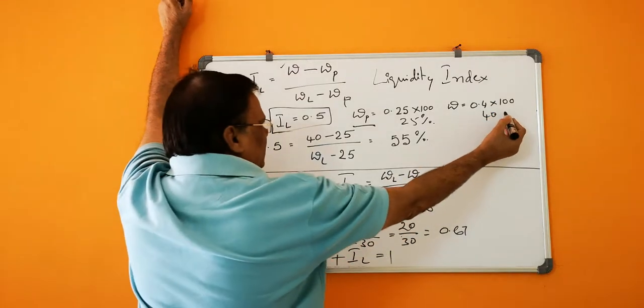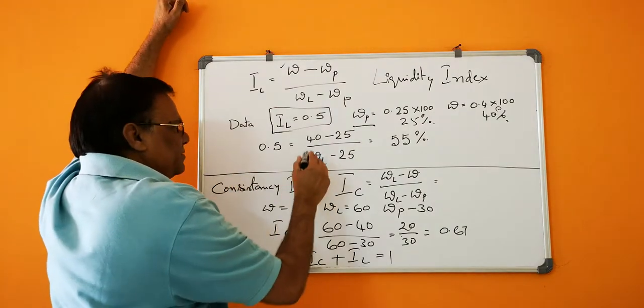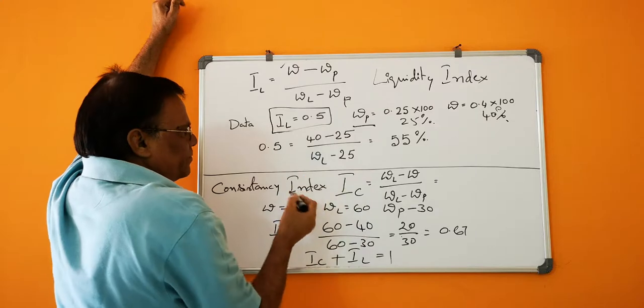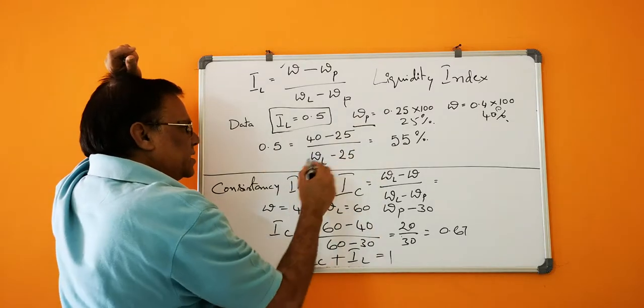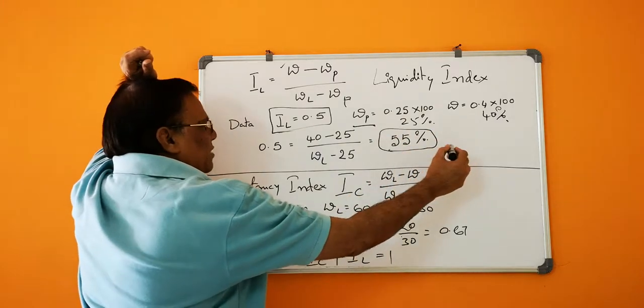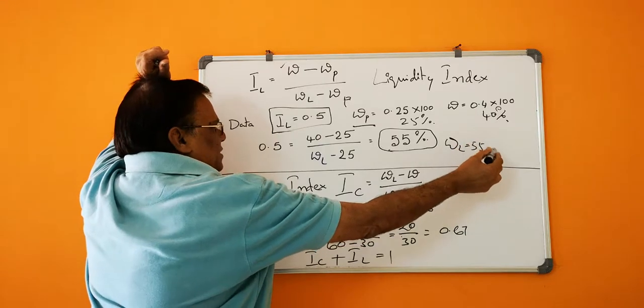So 0.5 equals 40 minus 25 by WL minus 25. If you solve all these things, you will get the liquid limit. Liquid limit is equal to 50 percent, this is one problem.